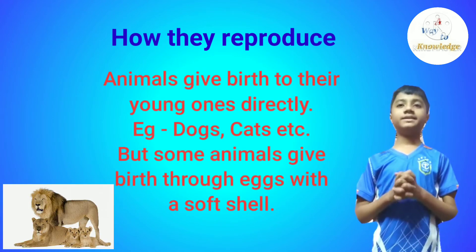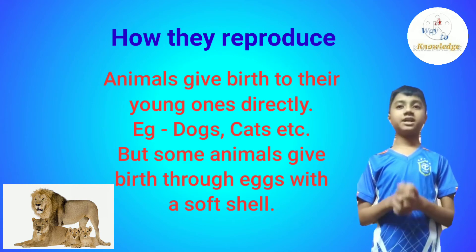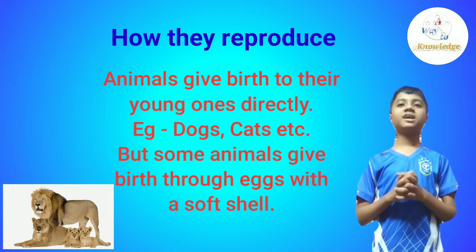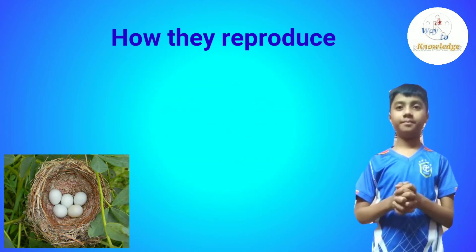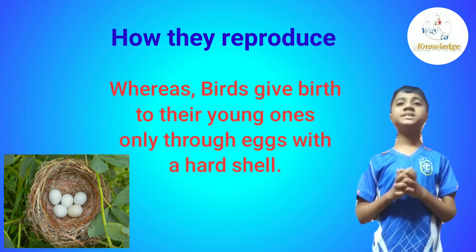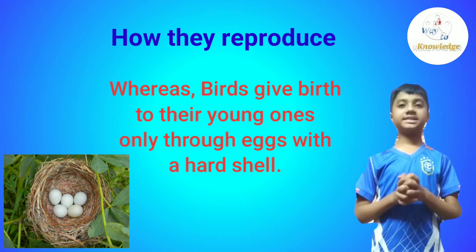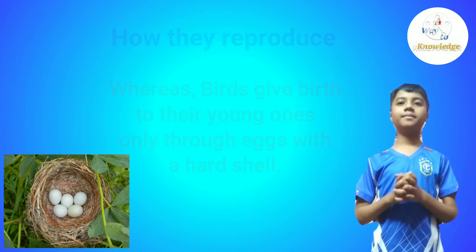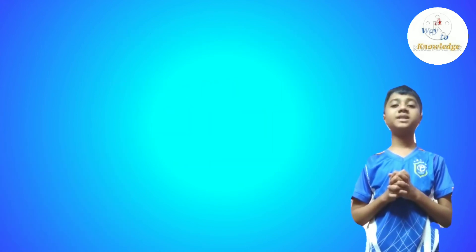Now let's know how they reproduce. Animals give birth to their young ones directly — for example, dogs and cats. But some animals give birth through eggs with a soft shell, whereas birds give birth to their young ones only through eggs with a hard shell.